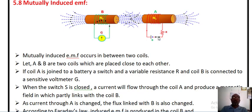When switch S is closed, current starts to flow through coil A, which produces a magnetic flux. Whatever flux is produced by coil A is partially linked with coil B.